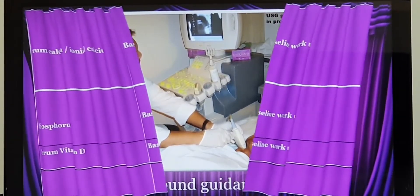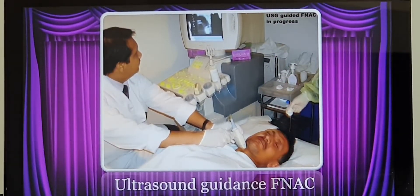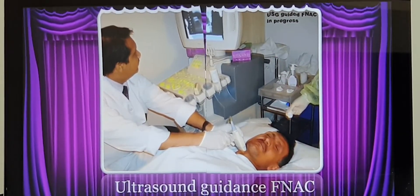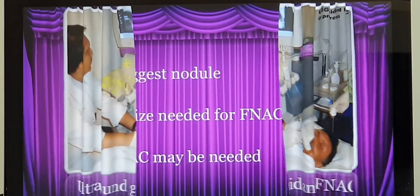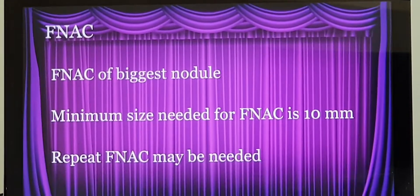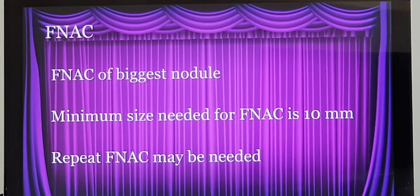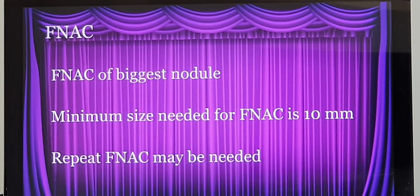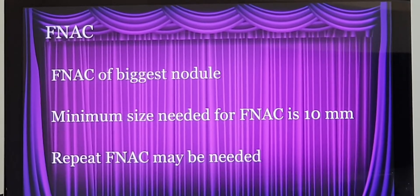This is a picture of ultrasound-guided fine needle aspiration. We put a small needle inside the nodule, aspirate the contents, and send for examination to know the type of cell. We put the needle into the biggest nodule, and we prefer to do it when the size of the nodule is more than 10 millimeters. I will tell you the conditions where we do it even when the nodule is less than 10 millimeters, that is between 5 to 10 millimeters.